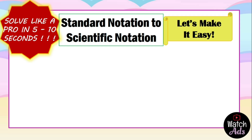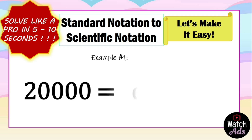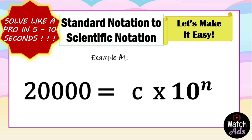Now let's apply our steps. Let's have our first example: twenty thousand. This equals C, or the numerical coefficient, multiplied by base 10 raised to the exponent N. Our first thing to remember is to ask yourself: is twenty thousand greater than one or less than one? Twenty thousand is definitely greater than one, so we know our exponent is positive. Next, we locate the original decimal point — for all whole numbers, it is located at the end of the number.